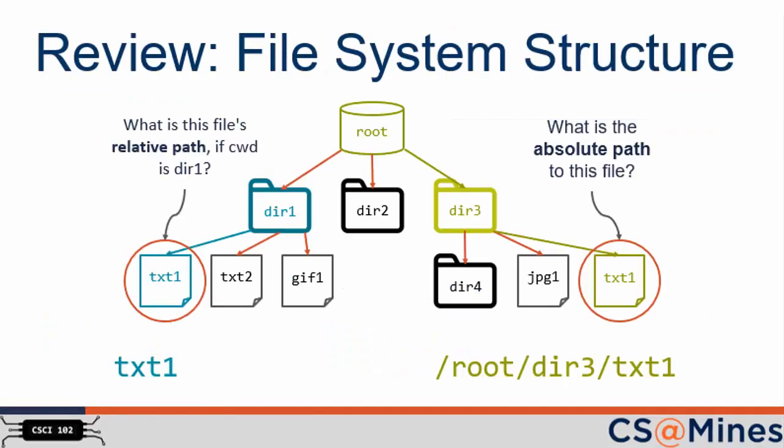The previous CS at MINES Python video was on file system structure. Recall that the file system structure is like a tree. It has a root, which is at the top of the tree, and then a number of other files and directories. In order to describe the location of a file in the file system structure, you can use either an absolute path, which starts from the root, or a relative path, which starts from the current working directory.